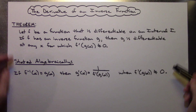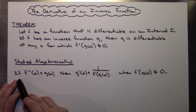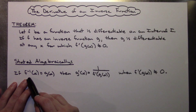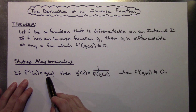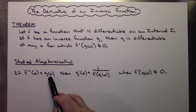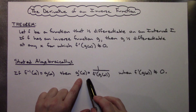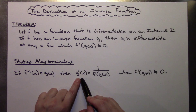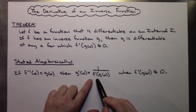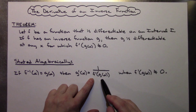Taking that theorem and stating it algebraically, basically what that says is that if the inverse of f is g — they're just renaming it there — then we can find the derivative of that inverse function. So g prime of x would be found by taking 1 over f prime of g of x.